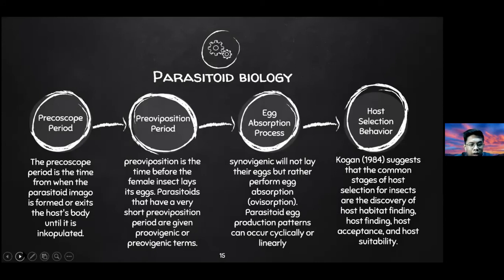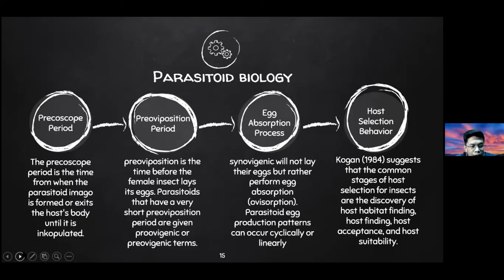Parasitoid biology covers four topics: the pre-copulation period, the pre-oviposition period, the egg absorption process, and host selection behavior. The pre-copulation period is the time from when the parasitoid imago exits the host body until it mates. The pre-oviposition period is the time before the female lays eggs.